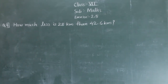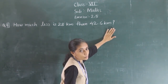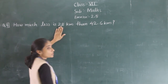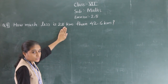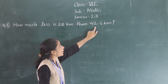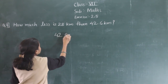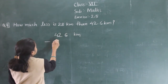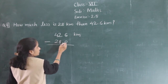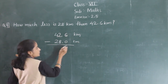Let's solve question number 9. How much less is 28 km than 42.6 km? So 28 km is less than 42.6 km, and to find by how much, we need to subtract.